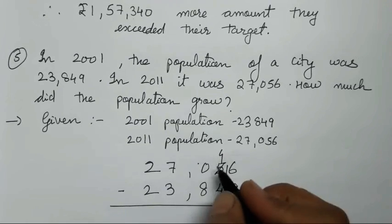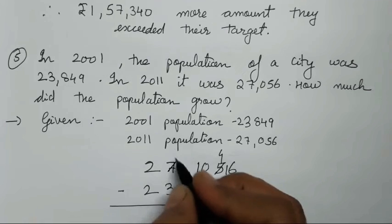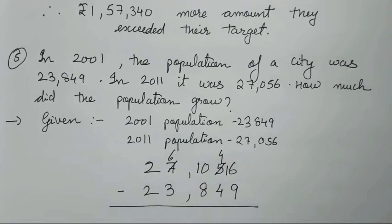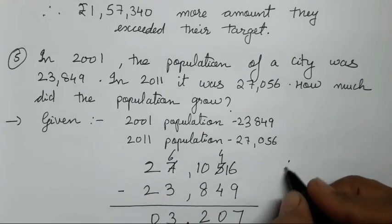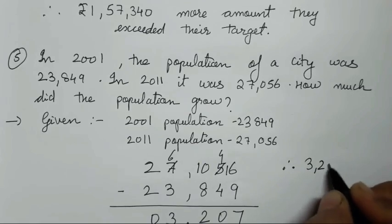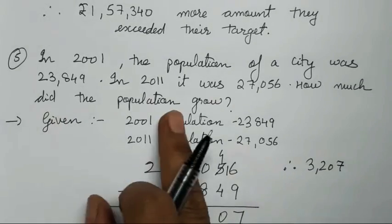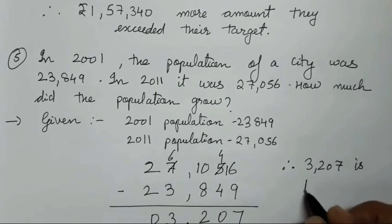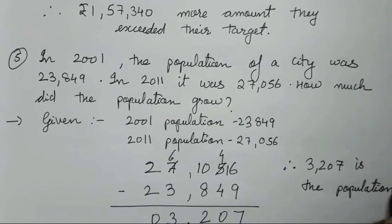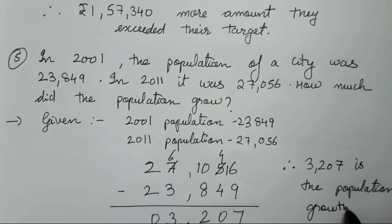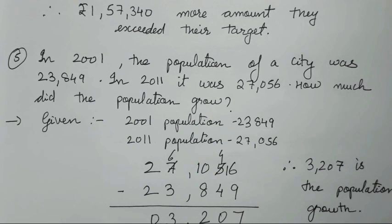Carrying: six minus nine we can't do, so borrow — becomes sixteen; after nine count to sixteen gives seven. Solving the rest: zero; six minus three is three; seven minus eight requires borrowing giving twelve minus eight is four; zero. Population growth is 3,207. So the population grew by 3,207. I hope this exercise is clear to everyone — see you in the next video, take care, bye!